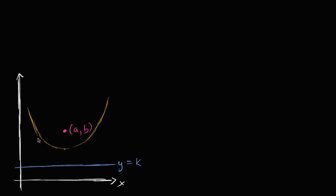Let's take an arbitrary point on the parabola — say this point right over here — with x-coordinate x and y-coordinate y. By definition, in order for this to be a parabola, it has to be equidistant to its focus and its directrix. That means the distance to the directrix, drawn here in blue, has to be the same as the distance to the focus, drawn in magenta.